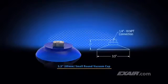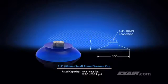For this application, we're using a 3.5 inch or 89 millimeter small round vacuum cup, which has the rated capacity of 49.6 to 63.8 pounds. This is 22.5 to 28.9 kilograms. It can easily handle the weight of the 19.1 pound box.